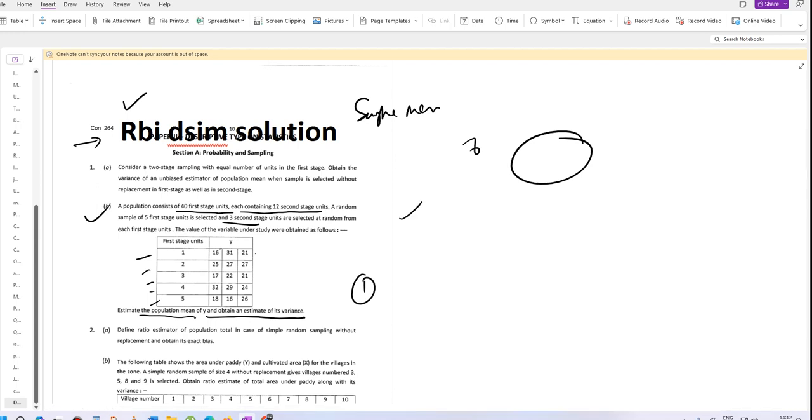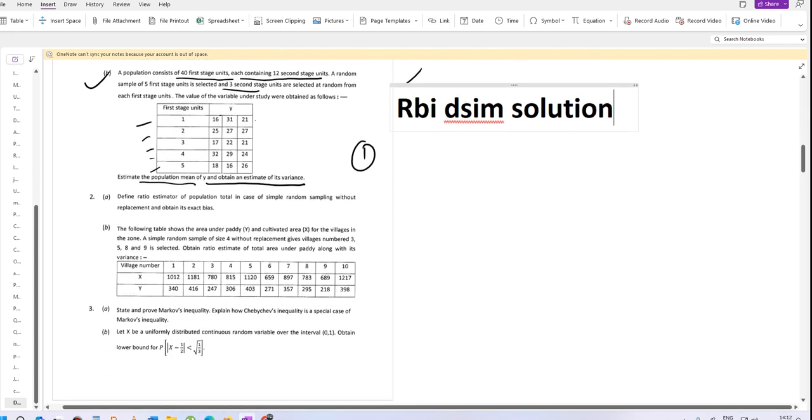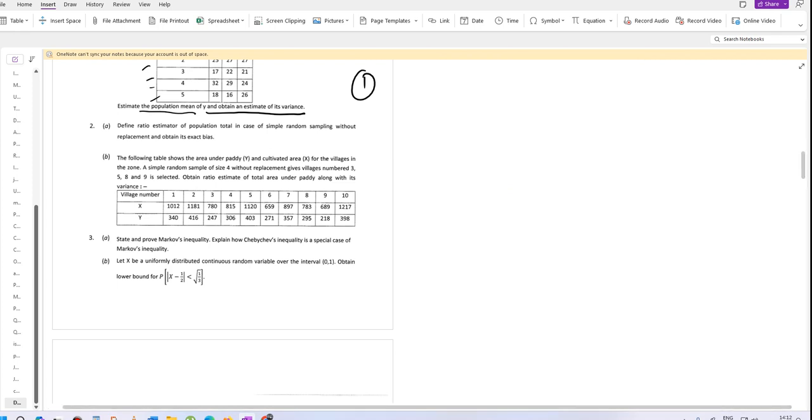Hello dear students, today we are solving the RBI DSIM problem. We have data on paddy cultivation and cultivated area X in villages in a zone. A sample of four villages without replacement gives the village numbers 3, 5, 8, and 9 selected. We need to obtain the ratio estimate of the total area under paddy along with the variance.